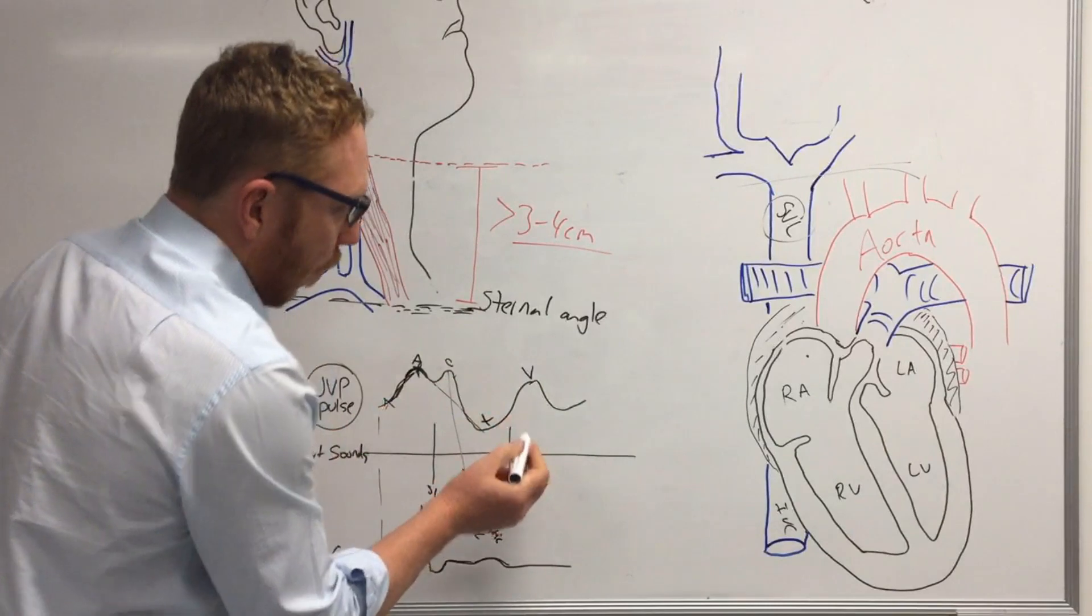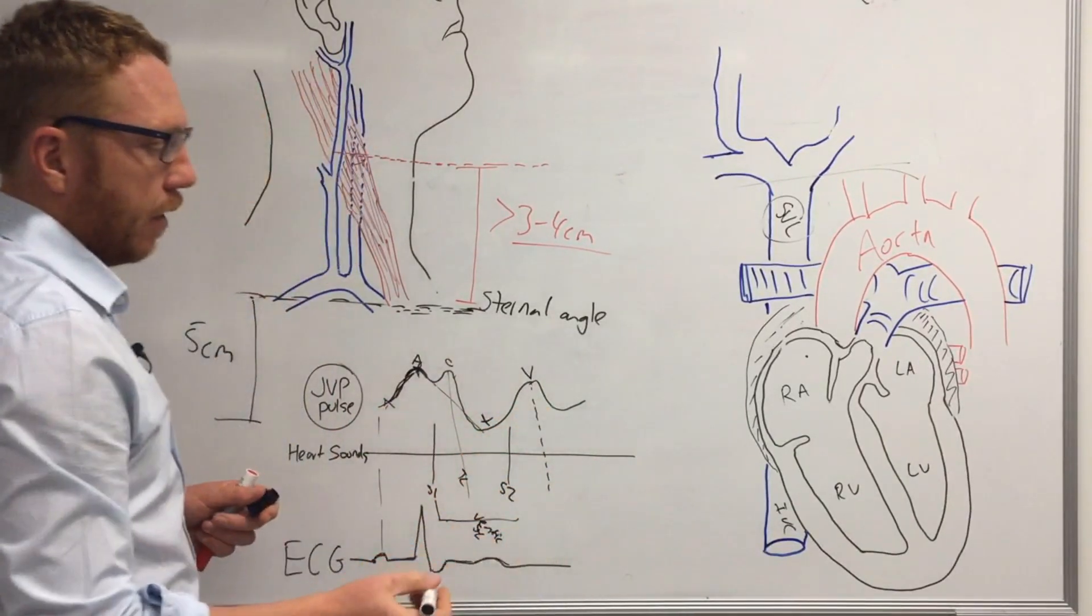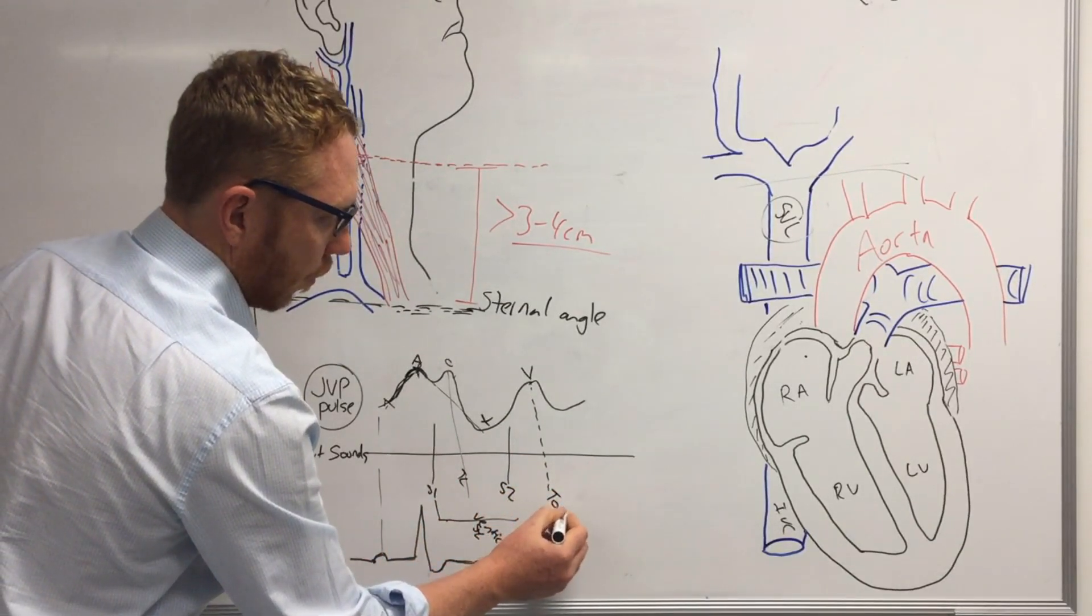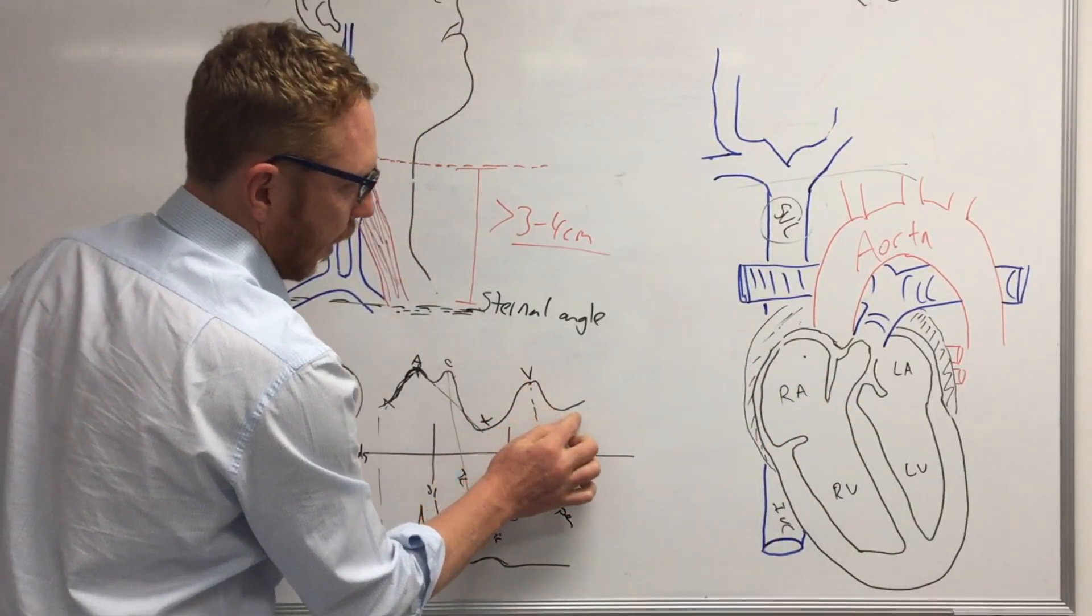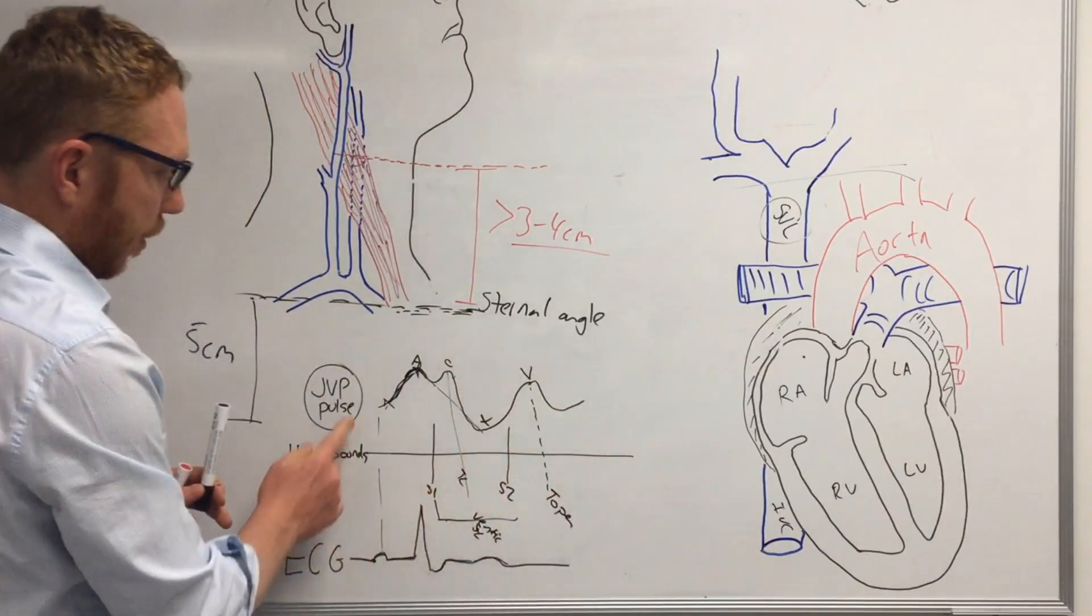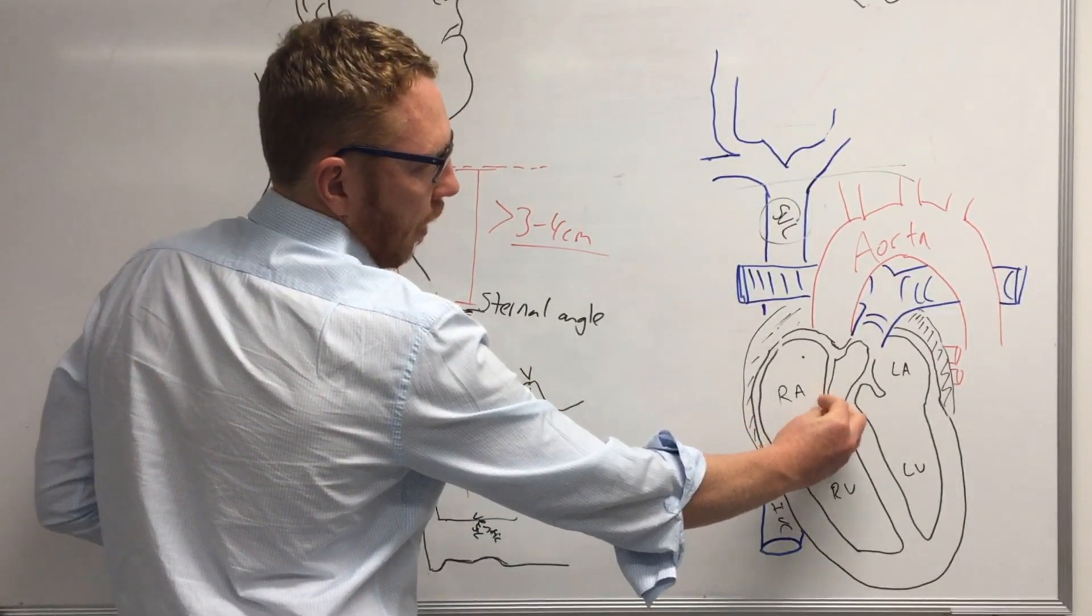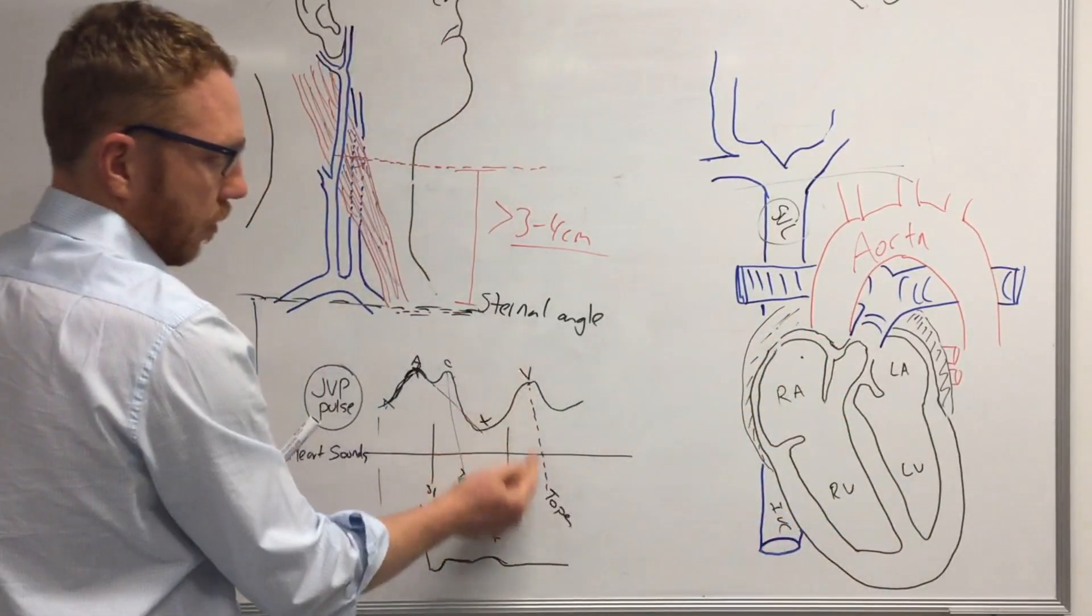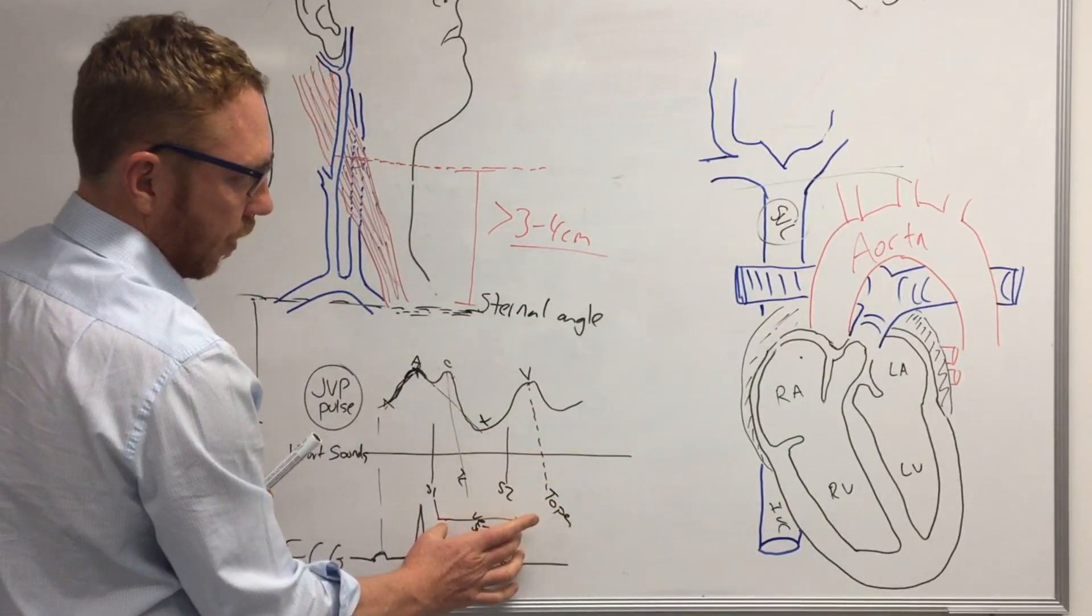And then what we would see happen kind of here is the tricuspid opens. So this valve now opens and we drop the pressure back down. And then we're ready to go into a next phase. So now the right atrium is open. So the blood starts to fill down into the right ventricle. So now we've kind of gone into ventricular diastole. That was ventricular systole.